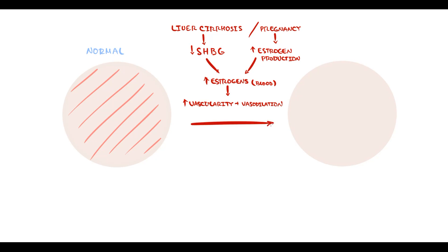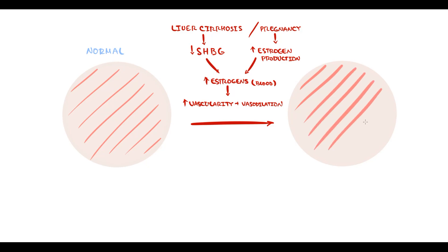If the amount of blood vessels increases and the vessels become more distended, this will cause increasing blood delivery to the palms. With increasing blood inside the vessels, the tint of the skin will be more reddish — and exactly this state we call palmar erythema.